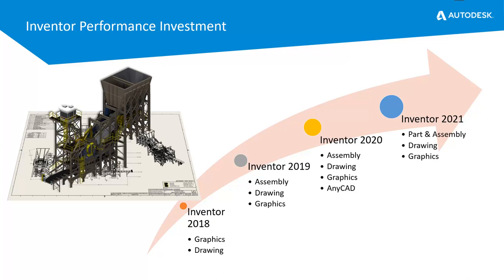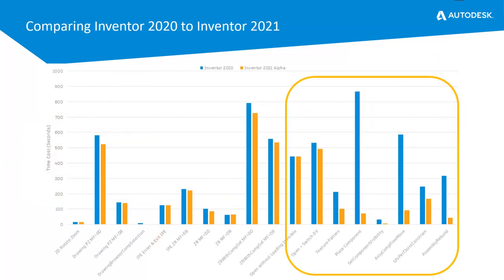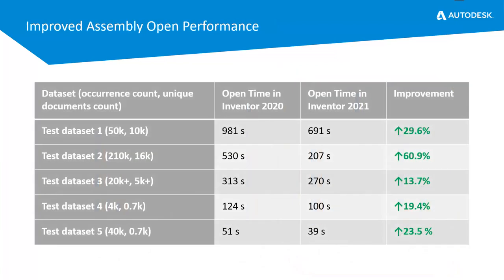Over the last few releases the development team has really invested a lot of time in improving performance, and you'll see year on year that drawings, graphics, and assemblies have gotten faster, as has AnyCAD, and this theme has continued through Inventor 2021. There are comparison graphs showing features that have improved. Assembly open performance shows a range from 13.7% improvement right up to 60.9% improvement — real improvement with assembly open performance.